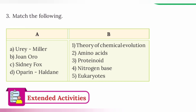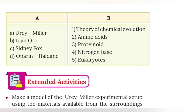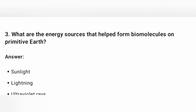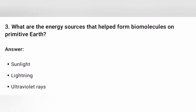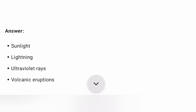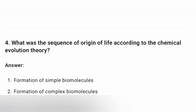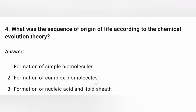Key concepts in chemical evolution include amino acids, proteinoids, nitrogen bases, and eukaryotes. The Urey-Miller experiment used ultraviolet rays and volcanic eruption conditions. What was the sequence of origin of life according to the chemical evolution theory?